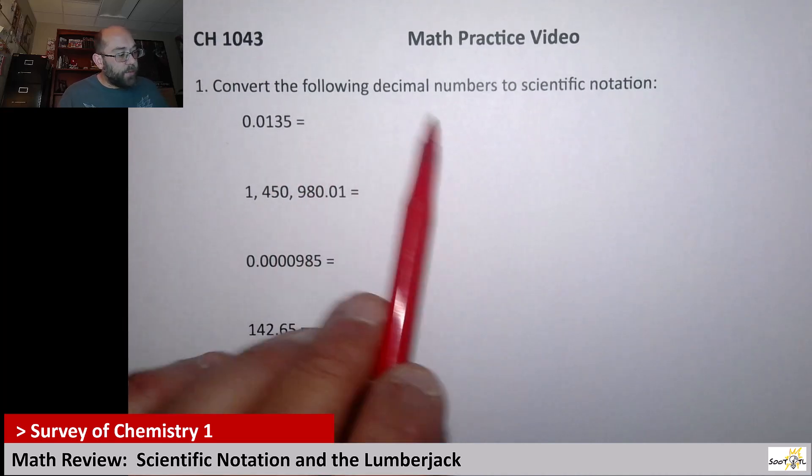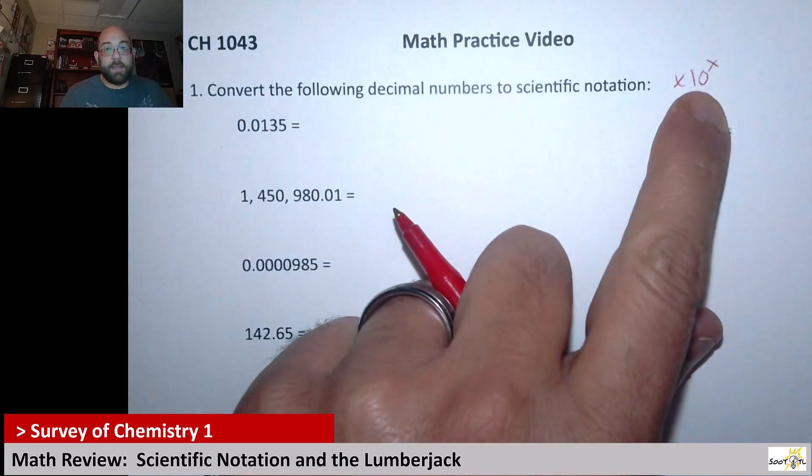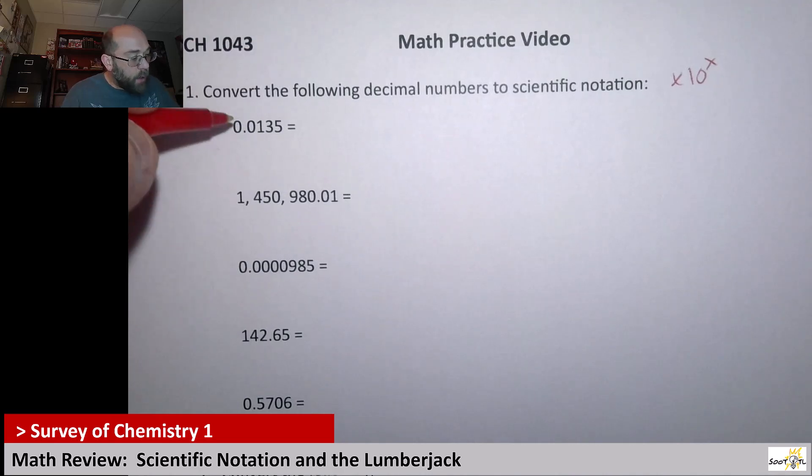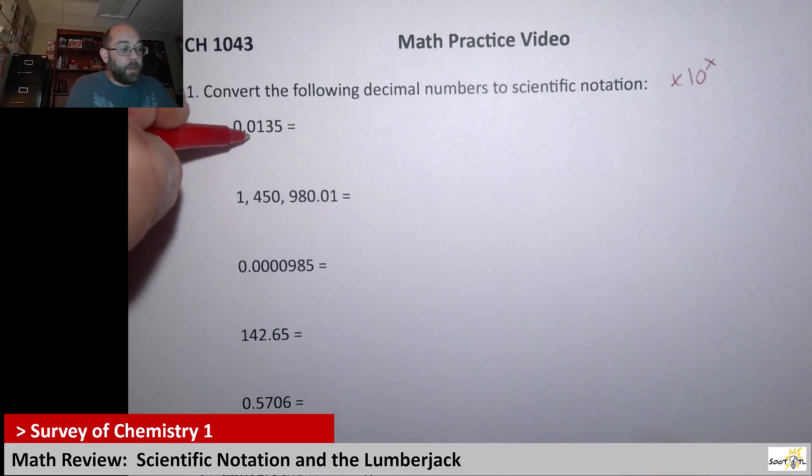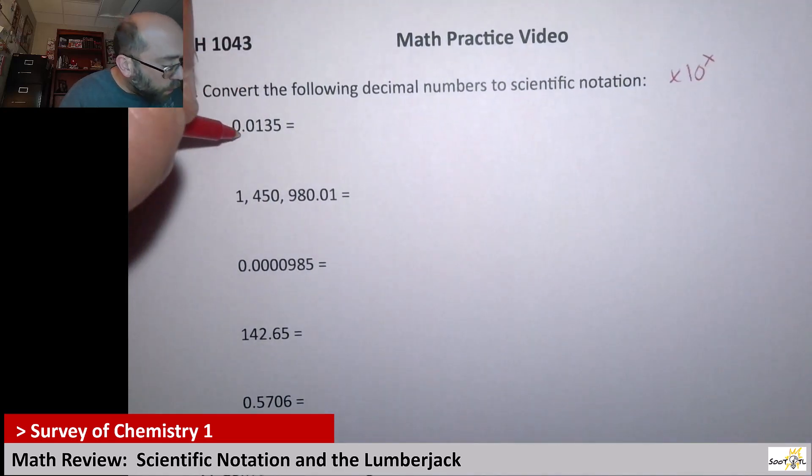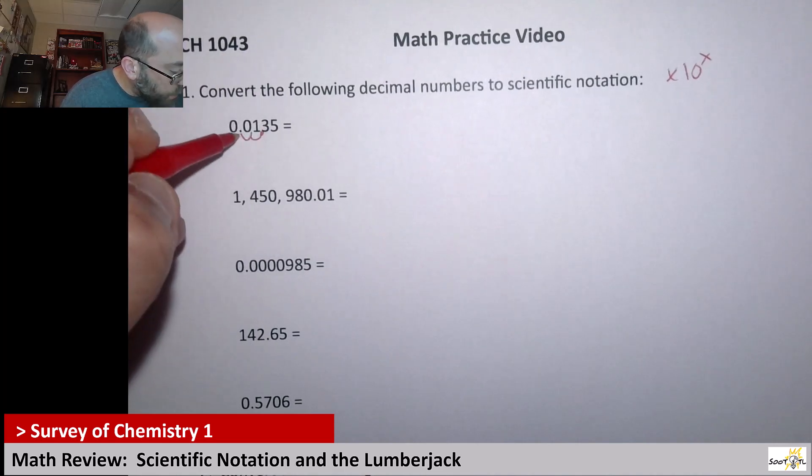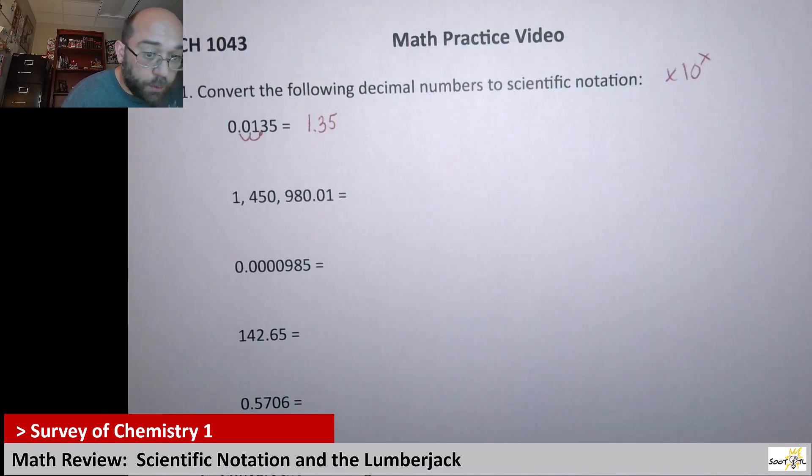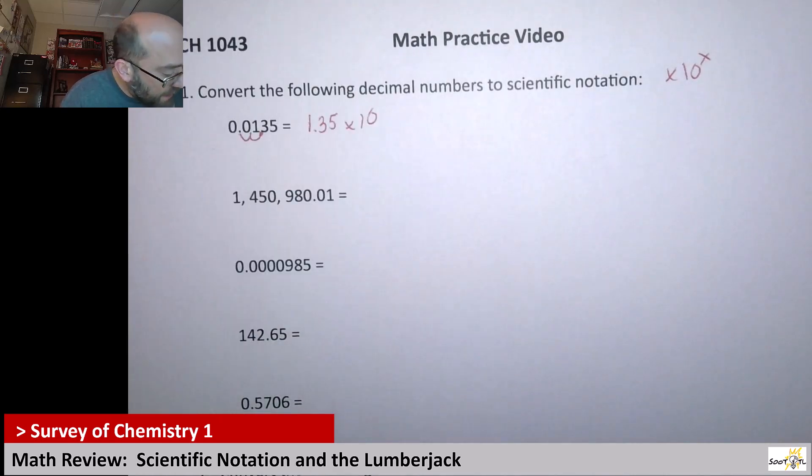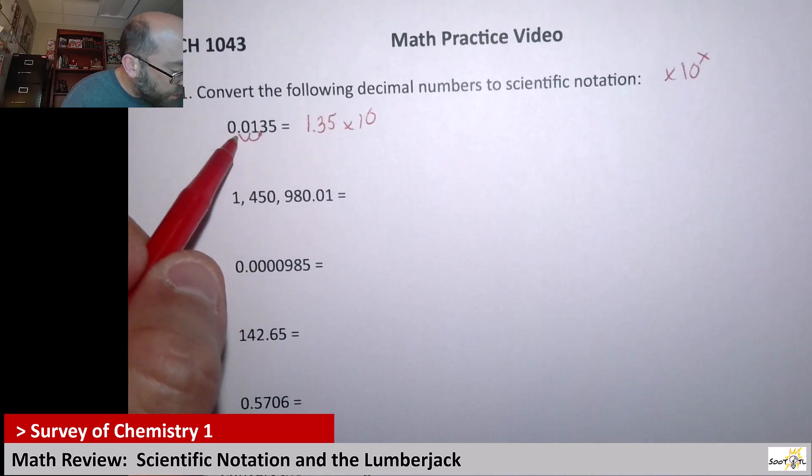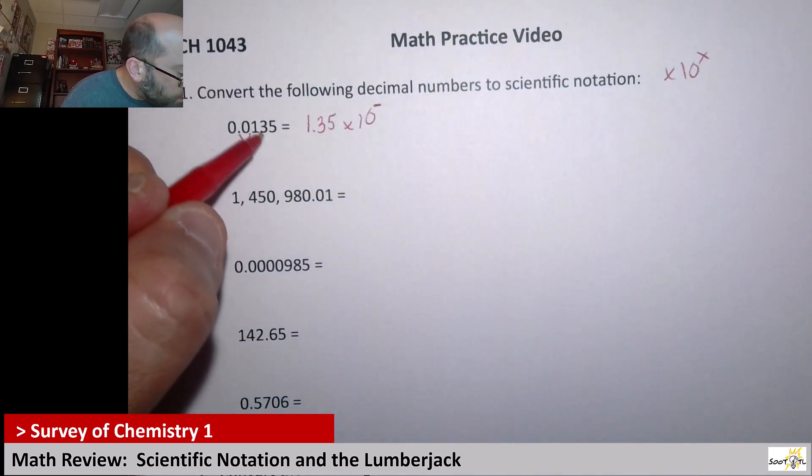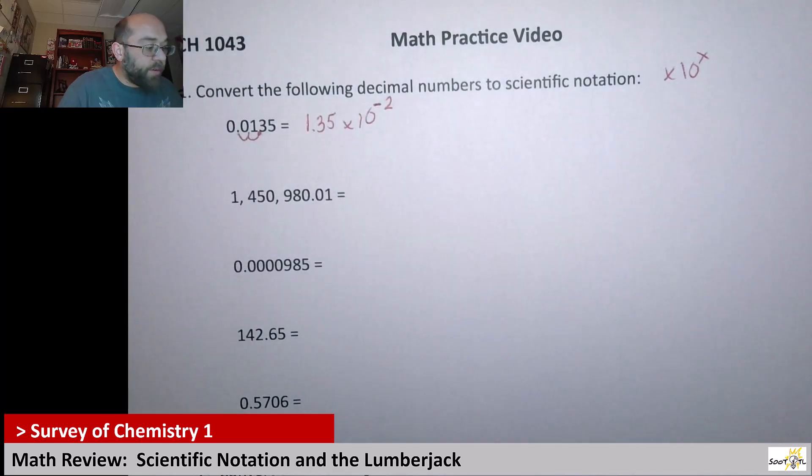Alright, so first up, here it wants us to convert the following decimals to scientific notation. That's where you use times 10 to whatever power. When we're given a decimal we have to start with some number that's less than 10 that you multiply by this 10. So we're going to need to move this decimal to right here. You notice we had to jump to the right two times. So it would be 1.35. Now from there I'm going to say times 10. And then the number I put up here is based off of which direction. In this case to the right. So it's going to be a negative power. And then I had to jump twice. So it would be 1.35 times 10 to the negative 2.